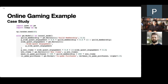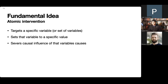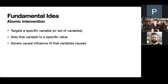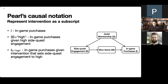The core idea in causal inference is the atomic intervention. An atomic intervention targets a specific variable or set of variables, sets that variable to a specific value, and severs the causal influence of that variable's causes. We have generalizations of this — stochastic interventions, fat-fingered interventions — but they're all based on this basic, simple idea of the atomic intervention. I need to introduce some notation to help us understand the kinds of questions we want to answer with these models.